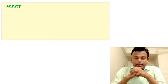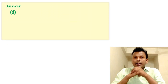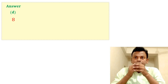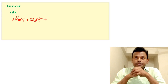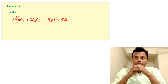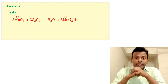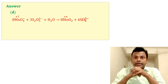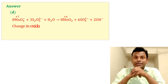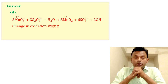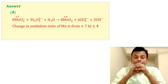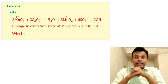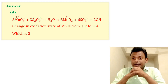Option D is the correct answer. The change in oxidation state of Mn is from plus seven to plus four, which is a change of three. So option D is the correct answer.